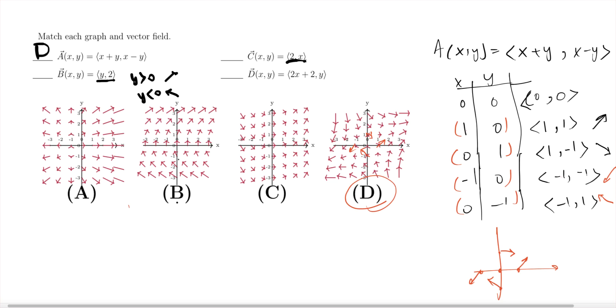The y value, the second component of the vectors, is all the same. They're all in a positive two direction. That will give me B in here.